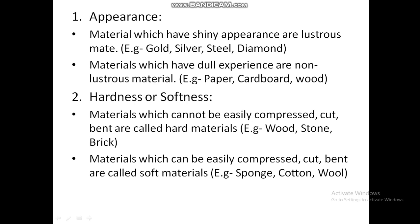First property: appearance. Materials which have a shiny appearance are also known as lustrous materials. Examples: gold, silver, steel, diamond. Materials which have a dull appearance are non-lustrous materials. Examples: paper, cardboard, wood, etc.